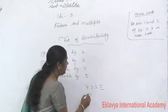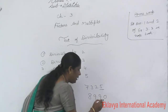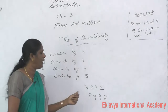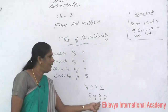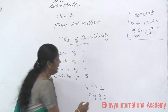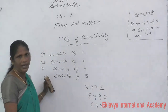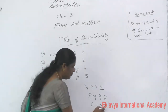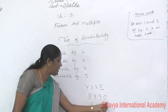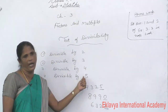Then 8990 — 0 comes in the 1's place, so it is divisible by 5. Then 6325 — 2 comes in the 1's place, therefore this number is not divisible by 5.